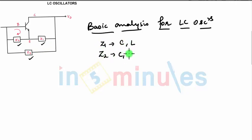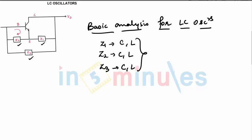Similarly, Z3 can be C or L. So for different types — you have the Hartley oscillator and the Colpitts oscillator — depending on the oscillator, you can have L or C in place of Z1 and Z2. What we can do is derive a generalized equation, and for all the oscillators we can just substitute: wherever you have C, substitute XC, or you can say Z for the capacitor, and Z for the inductor.